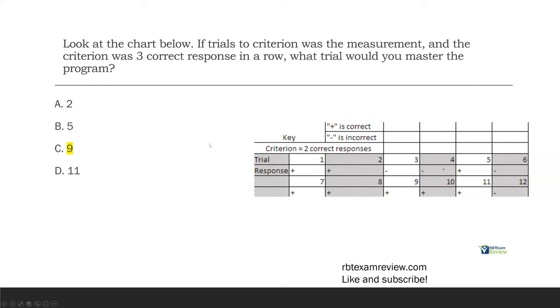Now, assume that our criterion requirement was two correct responses. When would you master it out? Well, if we look at trials one and two as correct, two correct responses, mastering it out at two. So, if our criterion is three correct responses in a row, we know it took nine trials to master the program. Understand this. It's a very useful measurement tool. We can really see how fast someone's obtaining a skill, and it's how goals are typically written. We want some sort of criterion to measure, can you do this consistently?